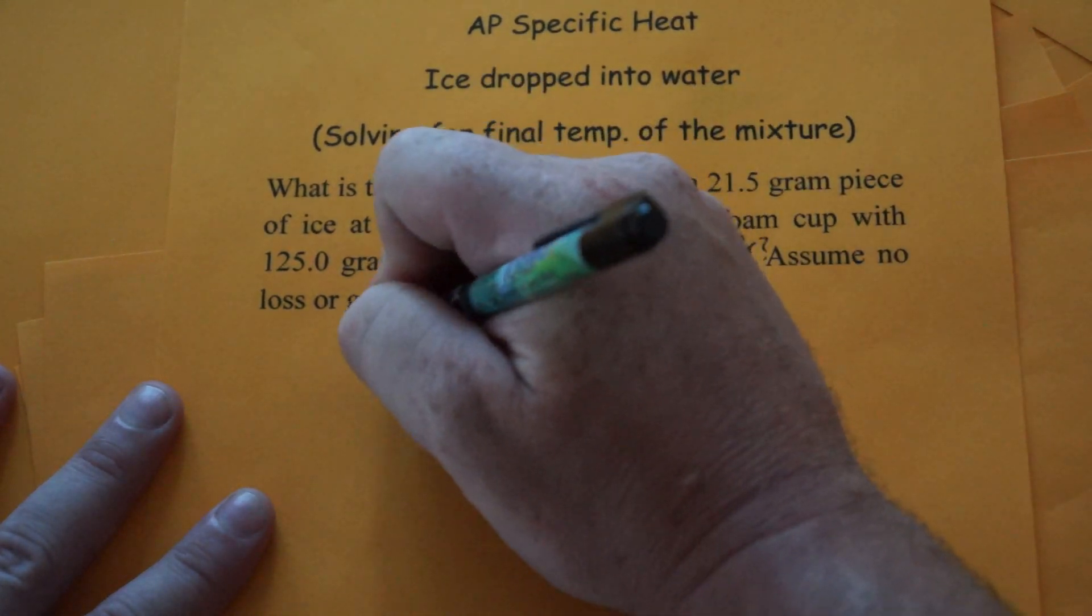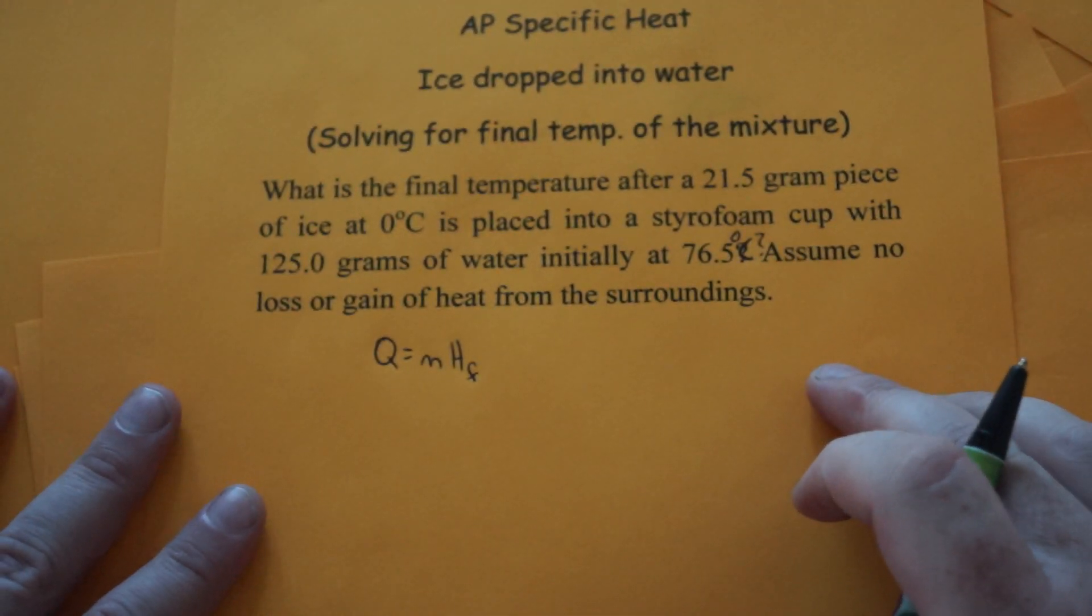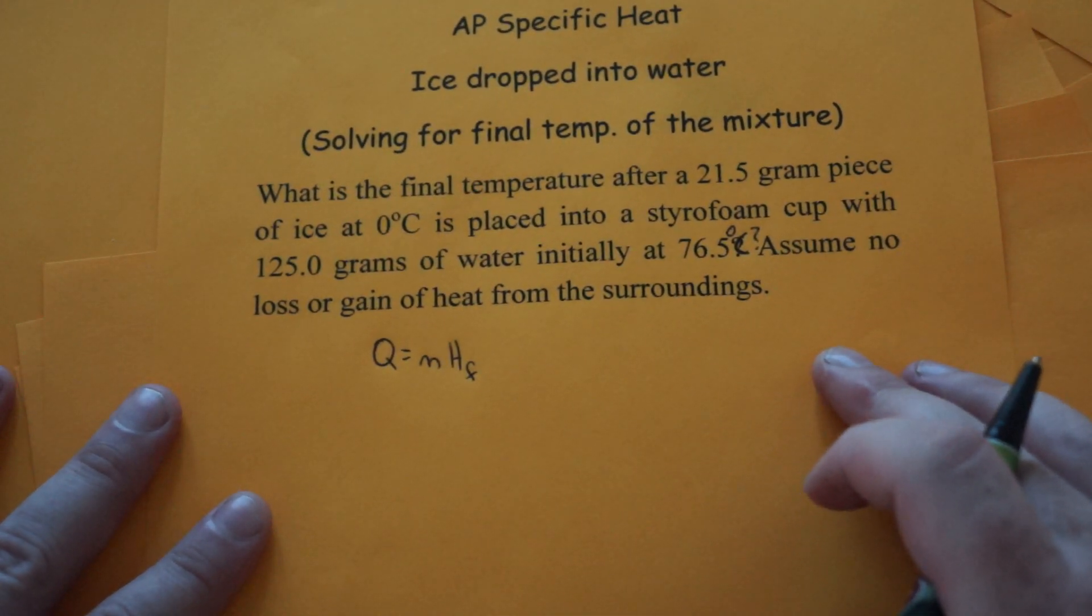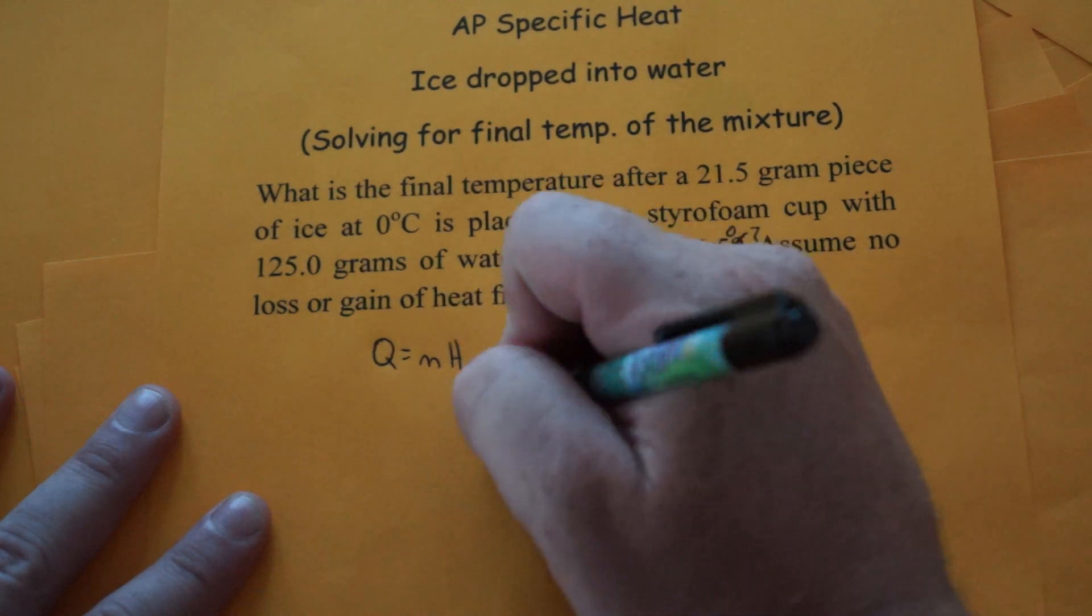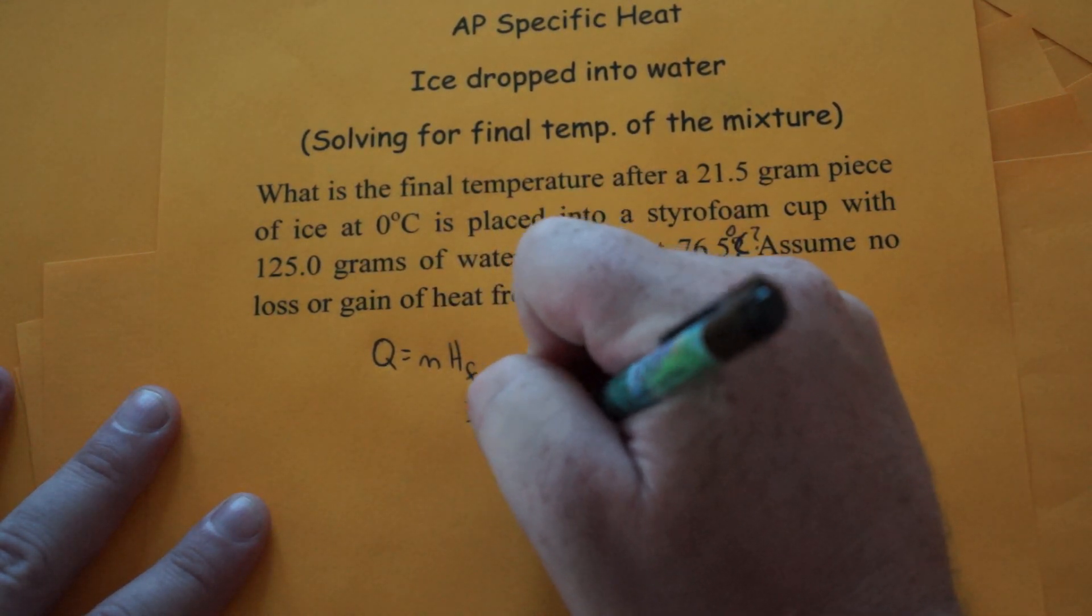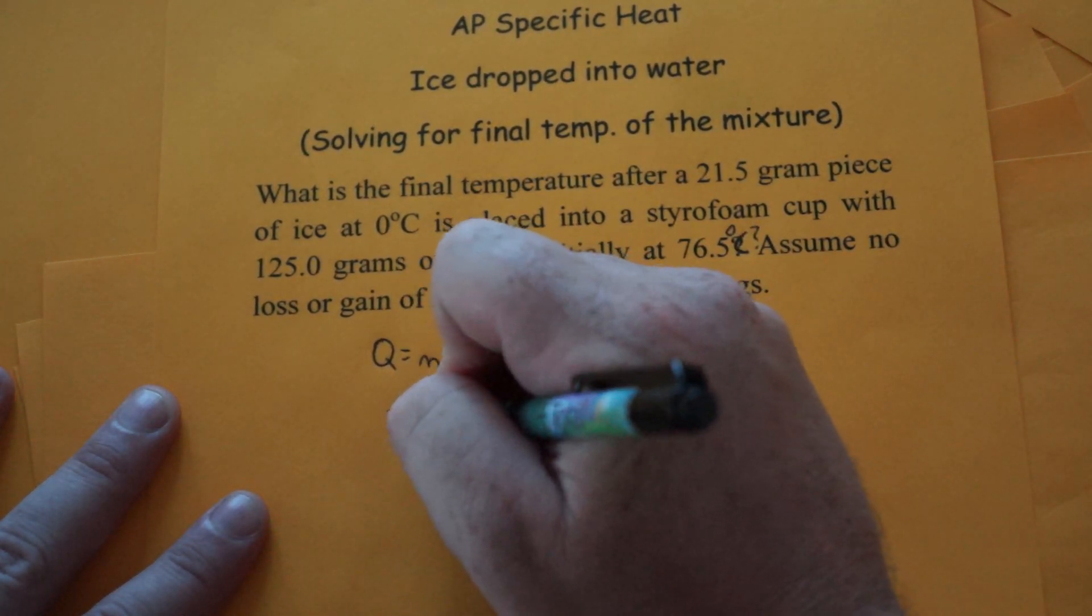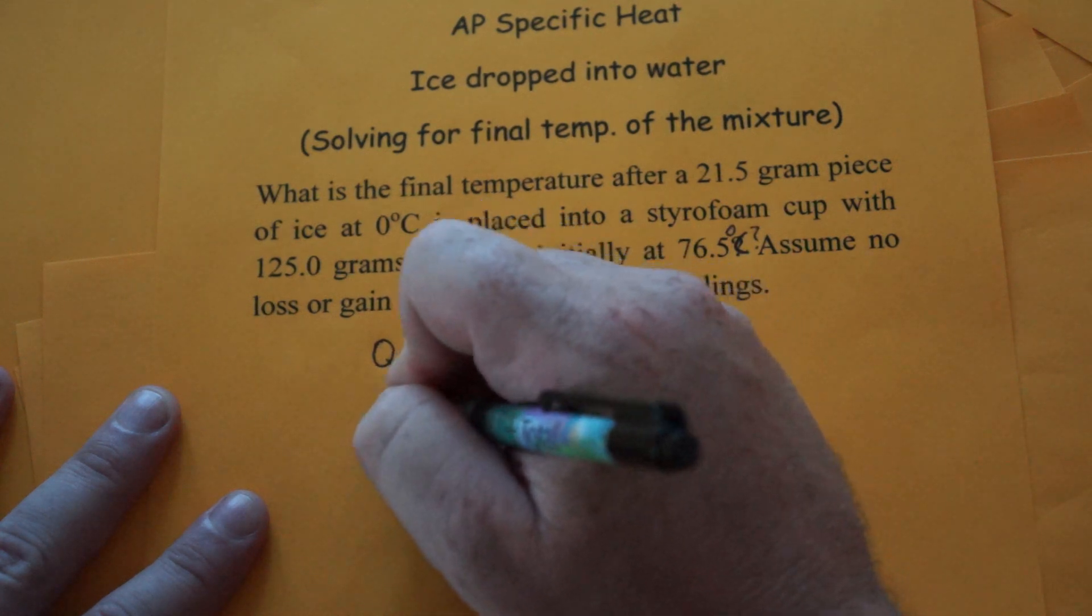So for the ice to melt you're going to use Q equals MHF. How much energy is required for the ice to melt? Well, HF is 334 joules per gram and the amount of ice we have here is 21.5 grams of ice.